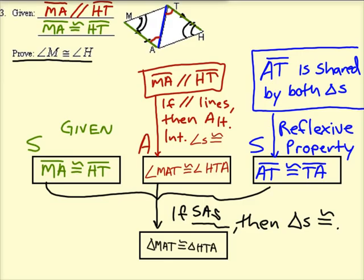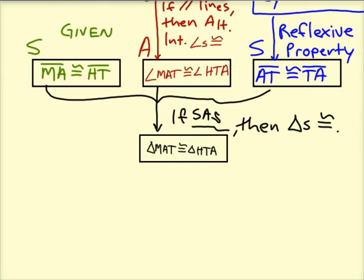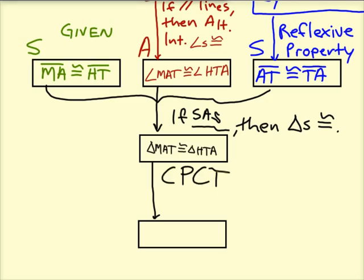Well, in order to do that, we're going to use CPCTC. See, once we've established that the two triangles are congruent, then all of the parts of the two triangles are congruent. That's what CPCTC stands for: corresponding parts of congruent triangles are also congruent. And so we can say, given the fact that triangle MAT is congruent to HTA, that means angle M must be congruent to angle H. And now, we're done with the proof.